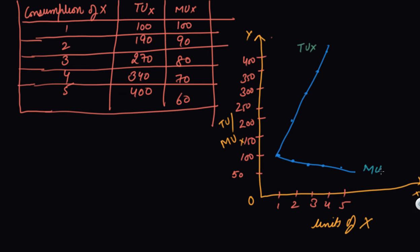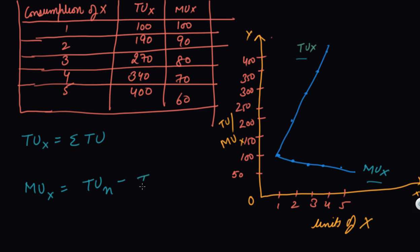The total utility is the summation — starting from 100 at unit 1, and so on. The formula to calculate the marginal utility is TU(n) minus TU(n−1): this minus this, this minus this, this minus this, this minus this, and 400 minus 340. This is how you calculate your marginal utility.